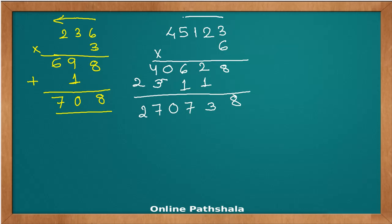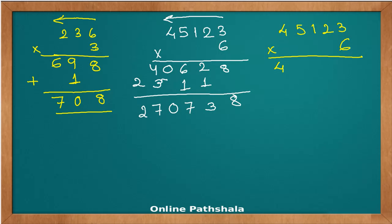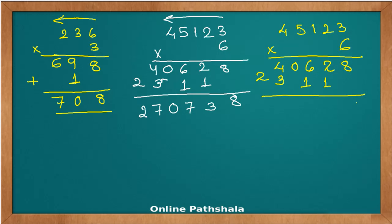Now let's do the same sum, 45123 multiplied by 6, from left to right. Six times four is 24 — put 4, carry 2 to the left; six times five is 30 — put 0, carry 3; one times six is 6; two times six is 12 — put 2, carry 1; three times six is 18 — put 8, carry 1. Adding up gives 270738 — the same product as before.